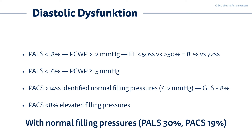Combining all measurements, we are relatively sure that filling pressures may be normal in this case. Diastolic dysfunction is a puzzle and we have to put together all the pieces. Left atrial strain, with the knowledge from current literature, can help identify normal filling pressures — even in patients with a reduced global longitudinal strain but preserved ejection fraction. Even though the global longitudinal strain is reduced, we can be quite sure that filling pressures are normal using measurements of peak atrial strain and peak atrial contraction strain.